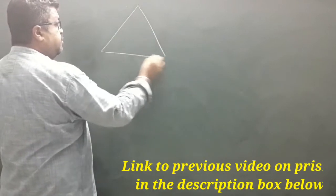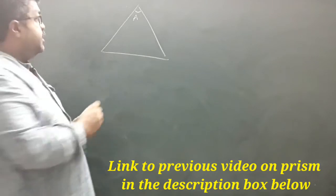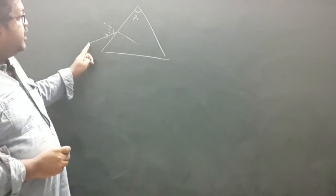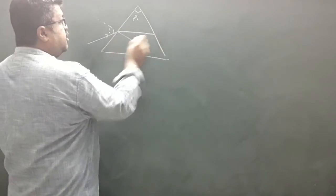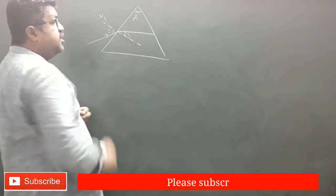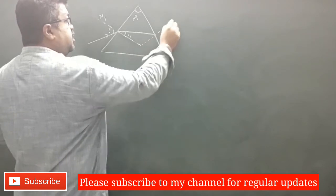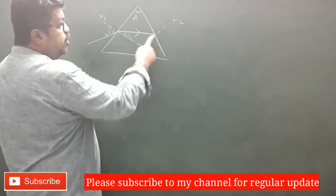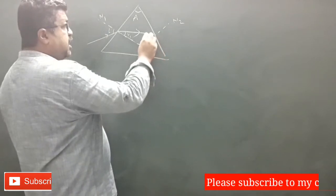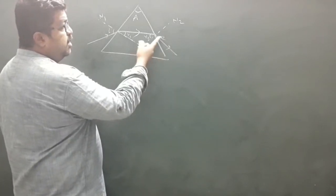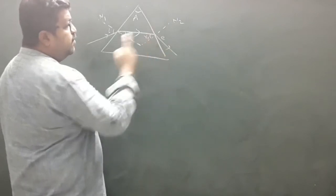As we have seen in the previous video, for the prism, this is the angle of prism and this is the incident ray. This is the normal, so this is the angle of incidence. The ray is traveling from rare medium to denser medium, refracted towards the normal. This is the first normal, this is the angle of refraction at the first refracting surface. This is the normal at the second refracting surface, so this is R2, and this is the emergent ray.